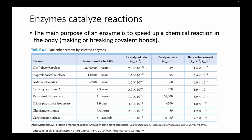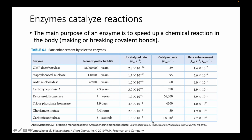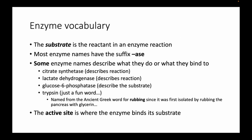Enzymes catalyze reactions — a catalyst speeds up a chemical reaction without being consumed. Here are some examples of different enzymes showing the uncatalyzed rate compared to the catalyzed rate. For one enzyme, that's 39 reactions per second, giving a rate enhancement of 1.4 times 10 to the 17th times faster when the enzyme is present. These examples illustrate that enzymes speed up reactions enormously.